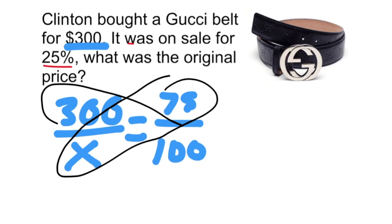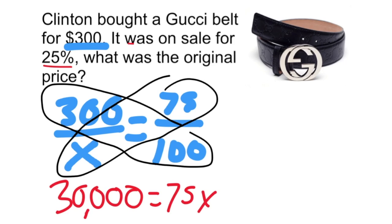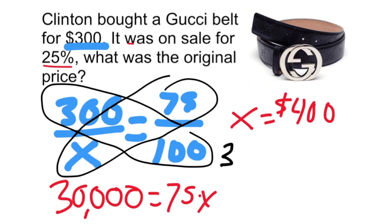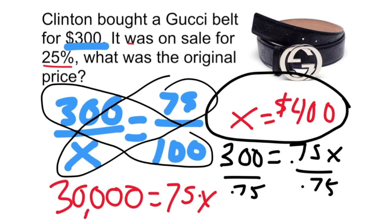Cross-multiplying gives 30,000 equals 75X. Dividing both sides by 75, we find X equals $400. Alternatively, you can solve the equation 300 equals 75% of the original amount — dividing both sides by 0.75 still gives the same answer: X equals $400.